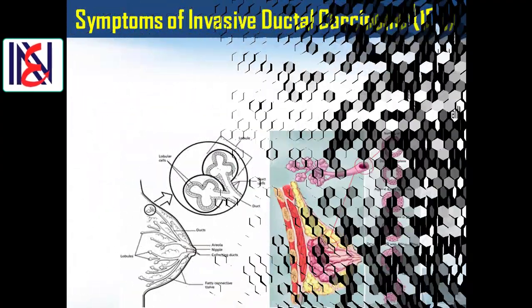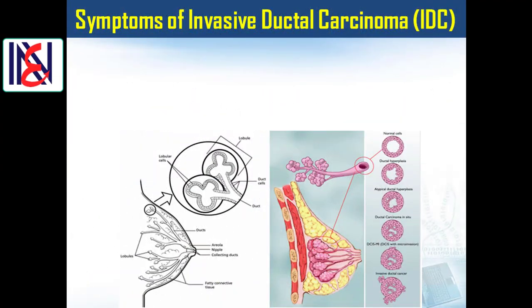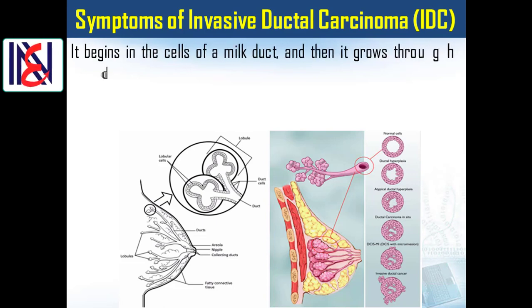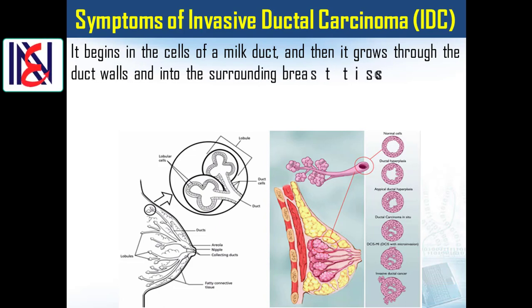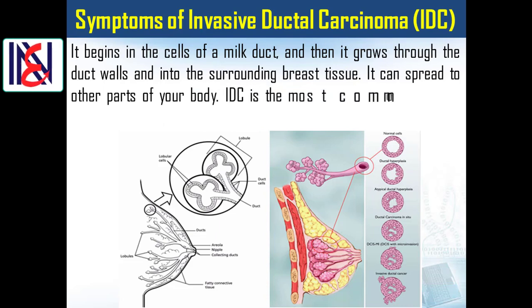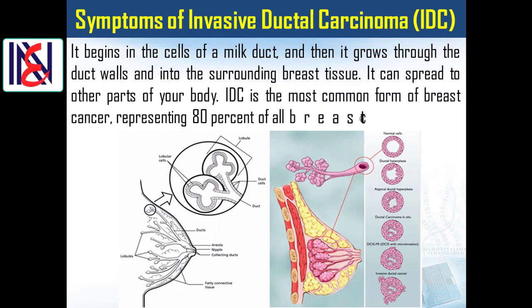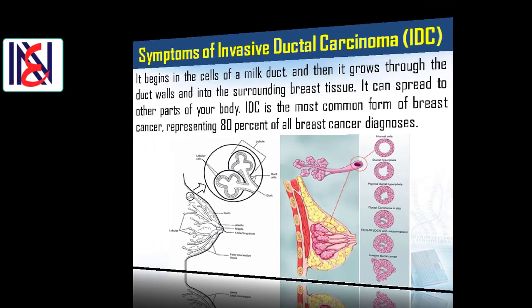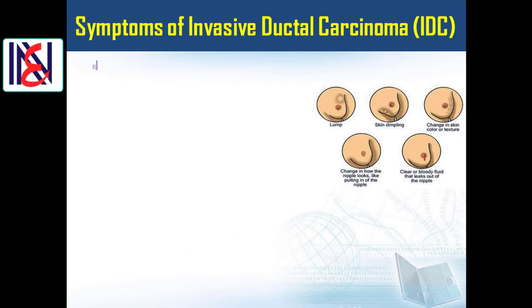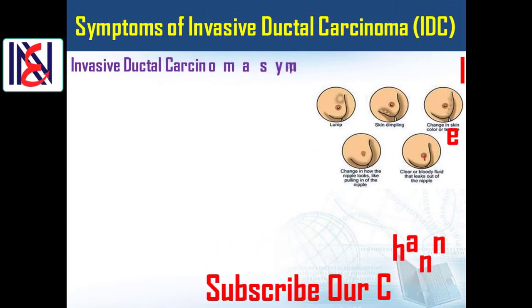Symptoms of invasive ductal carcinoma (IDC): IDC begins in the cells of a milk duct, then grows through the duct walls and into the surrounding breast tissue, and can spread to other parts of the body. IDC is the most common form of breast cancer, representing 80% of all breast cancer diagnoses. Invasive ductal carcinoma symptoms include the following.